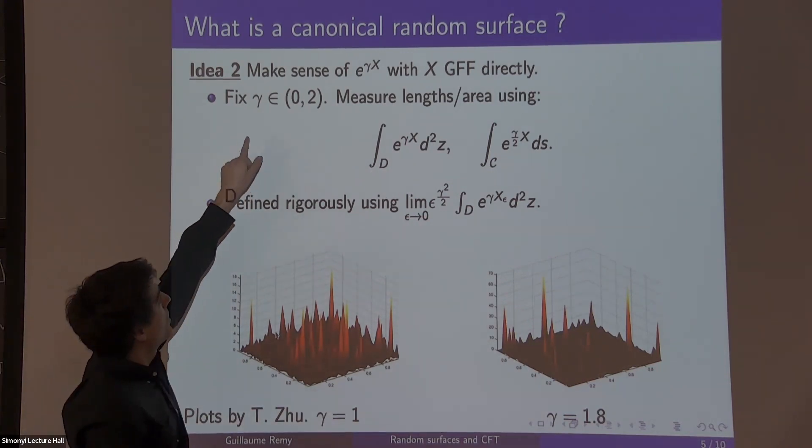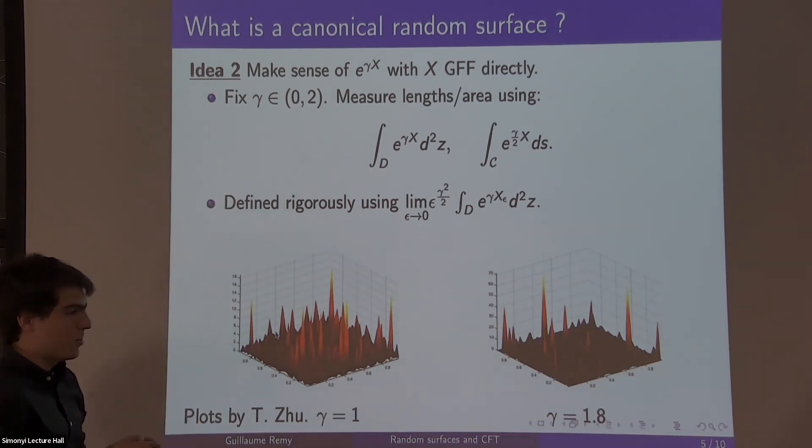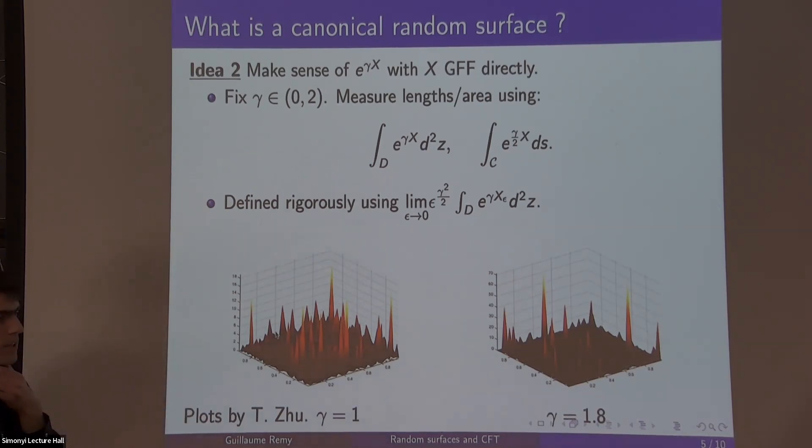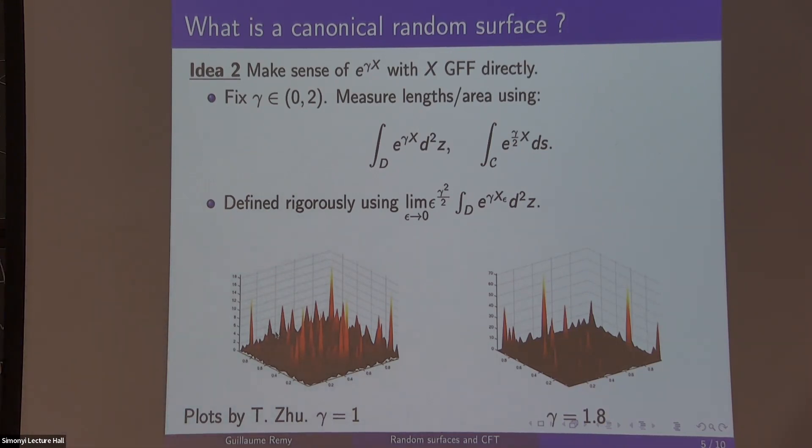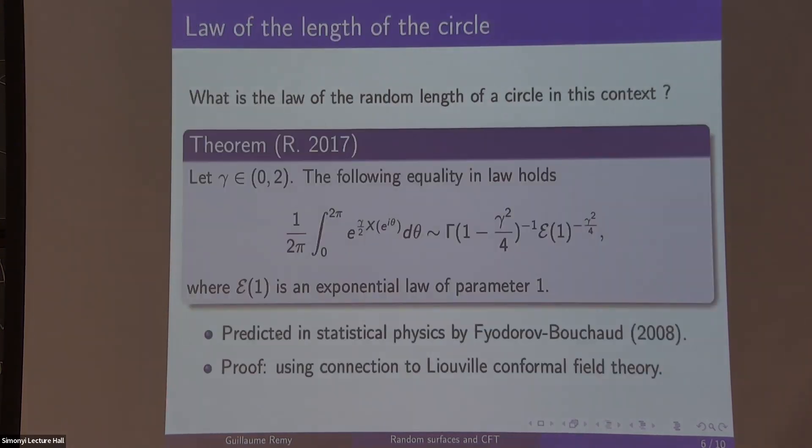I guess there's a large class of doing any statistical physics model on a random graph. Although it's very hard to show the scaling limit. Some will converge to these fractal geometries. For instance, gamma equals square root of eight-thirds is the Ising model, and gamma equals square root of three is the easy model. Each corresponds to different values of this parameter.